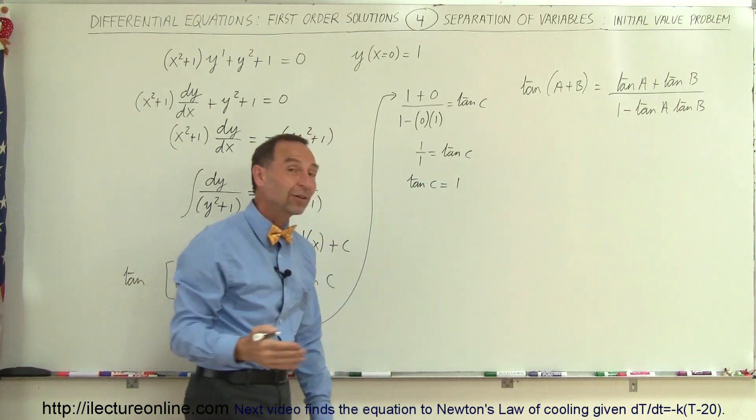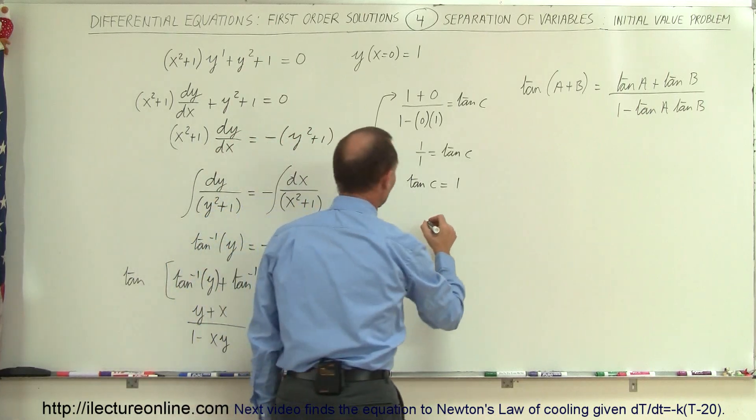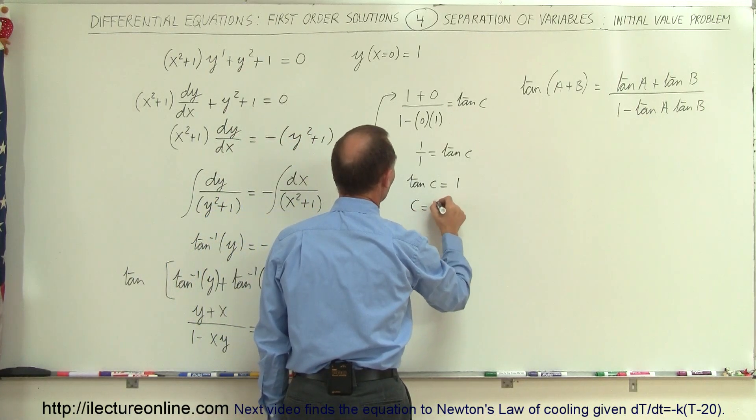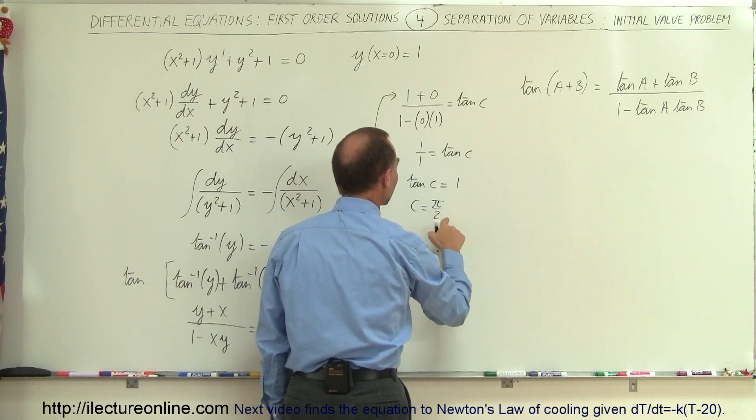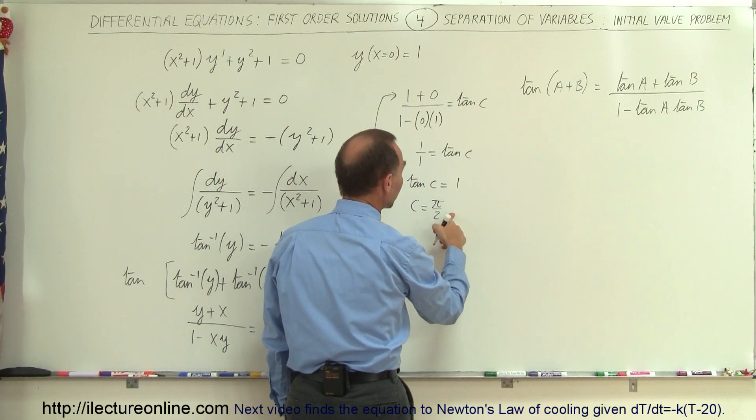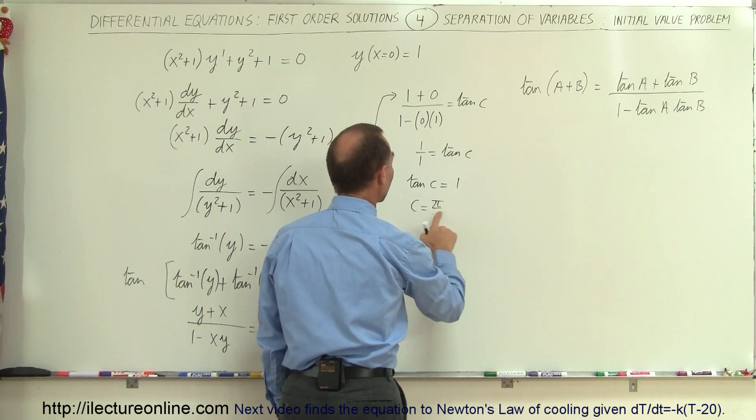That would be 45 degrees or π/2. So I can say therefore that c = π/2 because the tangent of π/2 which is 45 degrees, oh no, it's not π/2, it's π/4.